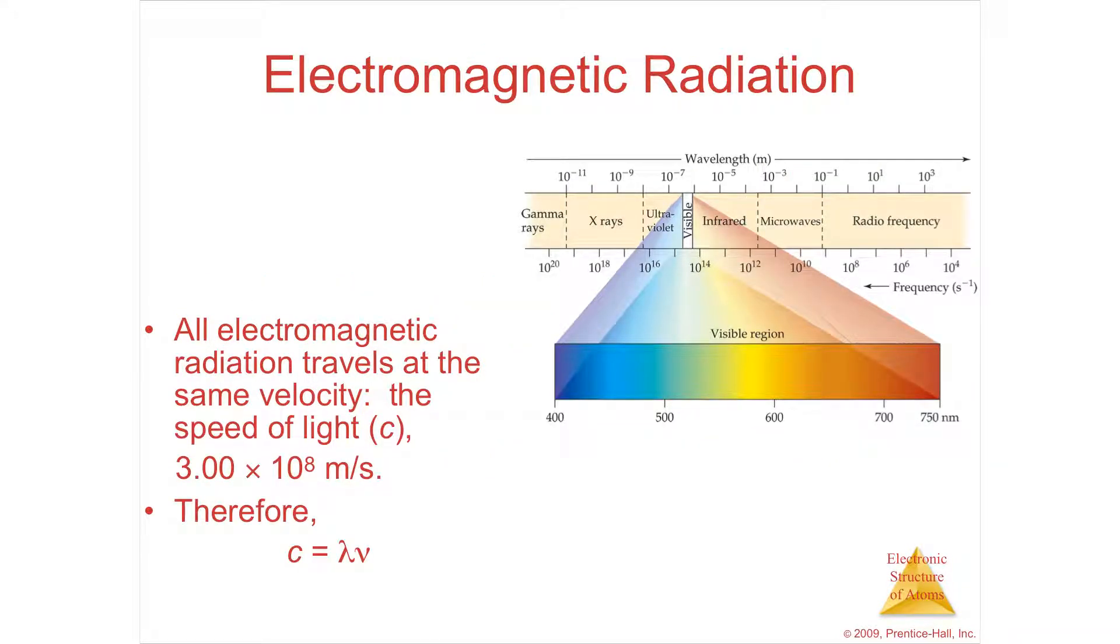So here you can see the formula that lambda (λ), which is the wavelength, and nu (ν), which is the frequency, are in inverse relationship, because they're on the same side of the equal sign. On the other side is the speed of light. So little c is denoting the speed of light, which is 3.00 times 10 to the 8 meters per second.